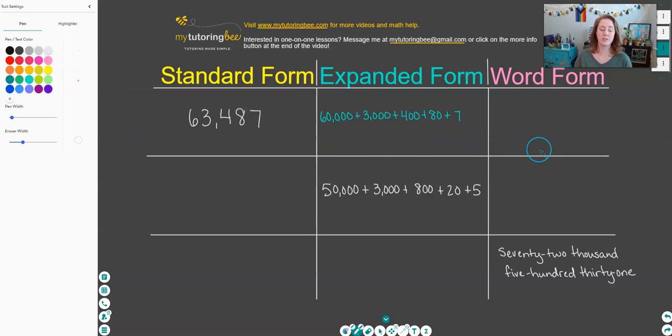Now word form is just written out in words the way that we would say this number. So 63,000—that comma gives us a signal of when to stop and say the place value—and then we have 487. So I'm going to write that in word form. Whenever we have two numbers that are put together like that, we want to put a hyphen in between. So again, 87 will be hyphenated.